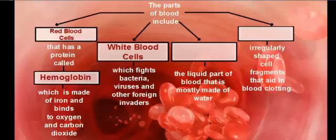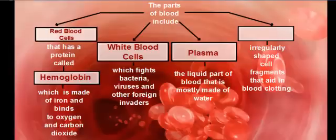We also have the liquid part of our blood — because as we know, when we bleed, it's a liquid that flows out. The liquid part is called the plasma, and it's mostly made of water. This is where your nutrients are dissolved — nutrients like sugars, amino acids, and other materials flow through the blood in the plasma to get to your cells.